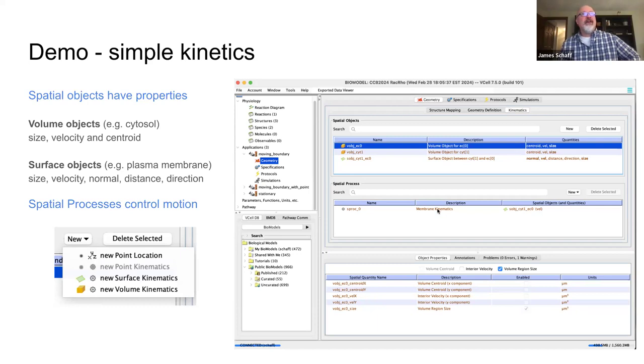Now, spatial processes really, we have two things for membranes. We have the membrane kinetics itself, subject to a velocity field. And within volumetric spaces, we can also have a velocity field that is applied as sort of an additional advection term.